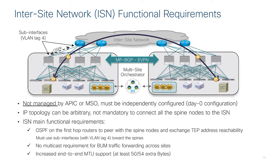Finally, the inter-site network needs to support an increased MTU for site-to-site traffic. This is because all site-to-site communication is VXLAN encapsulated, and VXLAN can add a 50 to 54 byte extra header to the original traffic.